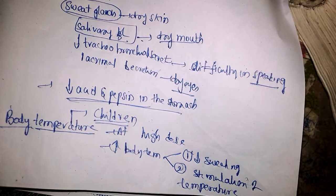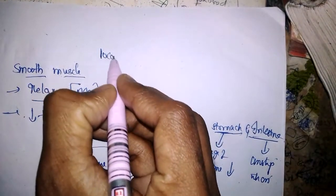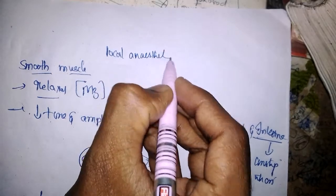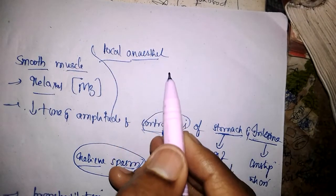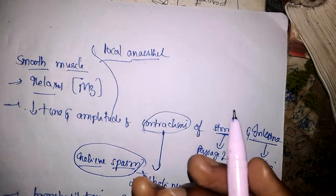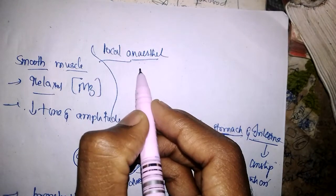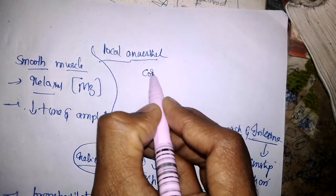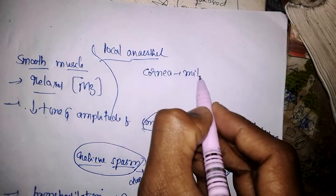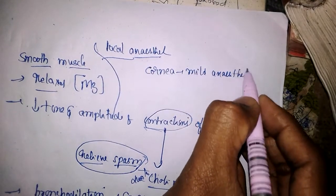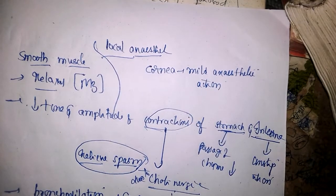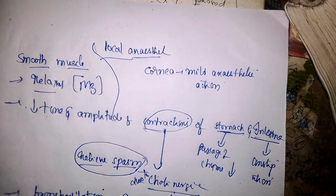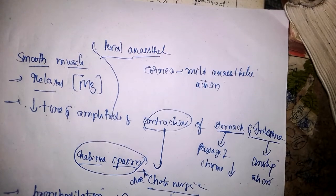Effect on local anesthetic action: atropine can act as a mild local anesthetic on the cornea — it has got mild anesthetic action on the cornea. That covers the pharmacological actions; the remaining topics will be discussed in the next video.